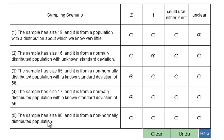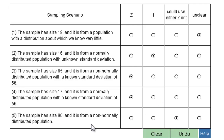The last one: sample size is 90, from a non-normally distributed population. They didn't tell me that we know the standard deviation, and they didn't tell me that we don't know it. This is the one where they don't tell you anything about the standard deviation but you have a big sample size — you could use either Z or T. When they don't tell you about sigma but the sample size is sufficiently large, we can use either Z or T.